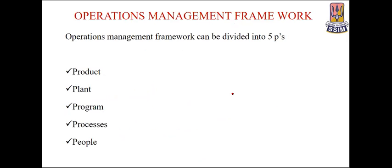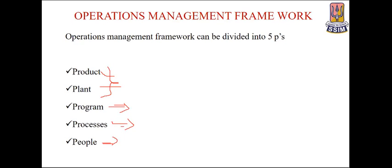The operations management framework can be divided into five P's: product, plant, program, processes, and people. The first two — product and plant — relate to facilities location and layout planning. Program is related to time. Process is related to the management of facilities. For people, we must fit the job to the person's capability so they can perform their task effectively and efficiently without excessive fatigue and boredom, ensuring a proper working environment.